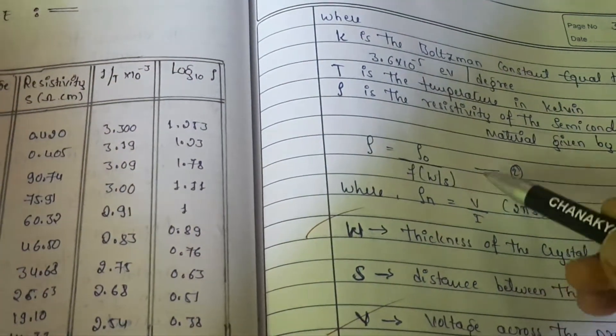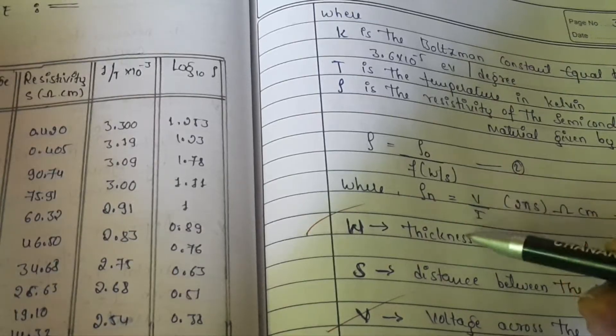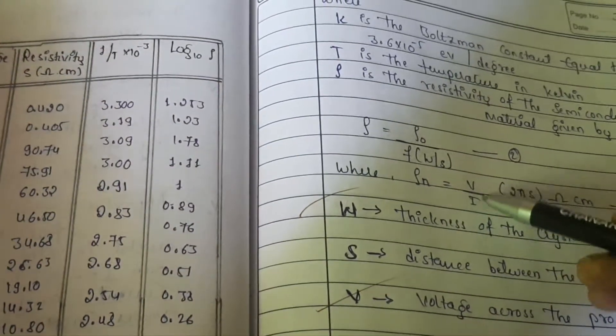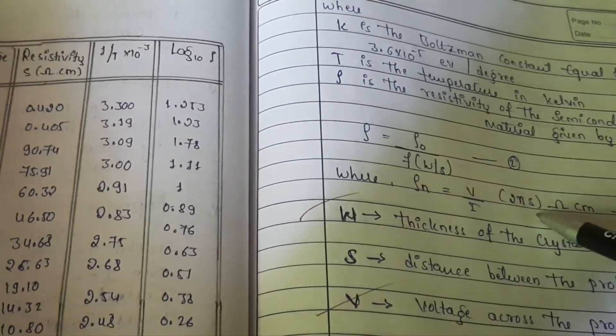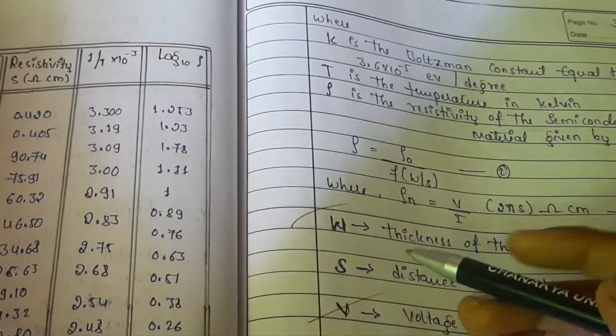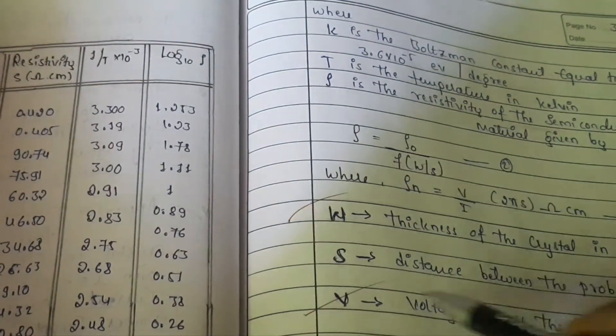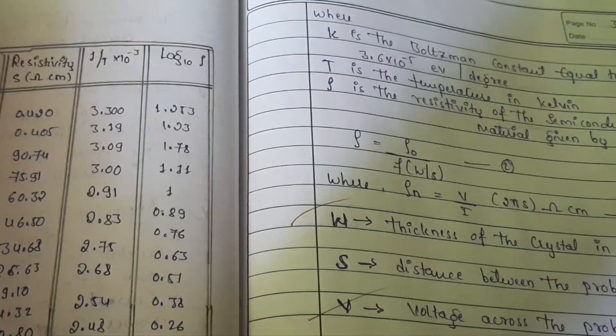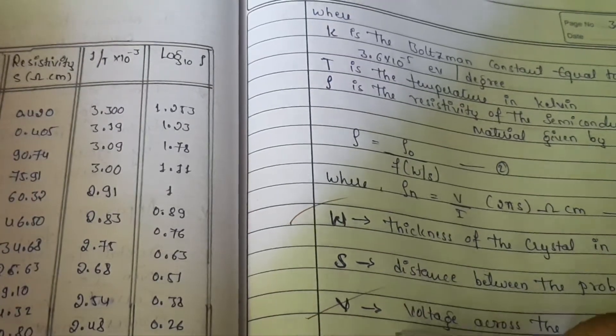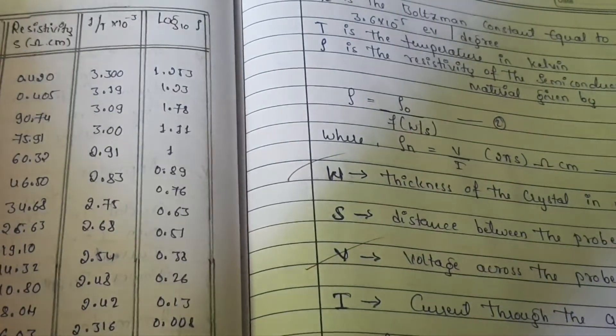Here is the formula: rho is equal to rho0 by F of W by S. So rho0 that is equal to voltage by current into 2πS, that is in terms of ohm centimeter resistivity. Omega is thickness of the crystal in millimeter, S is distance between the probes in mm, V is voltage across the probe, and I is current through the crystal.